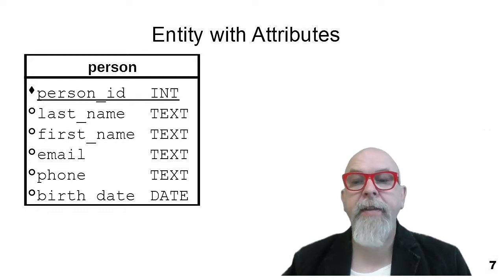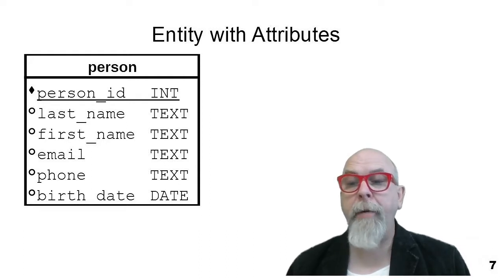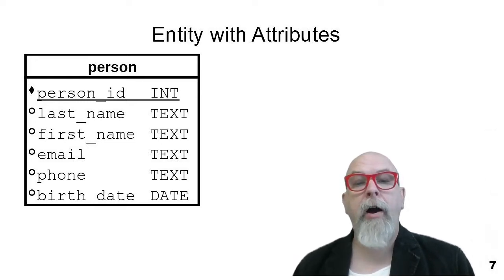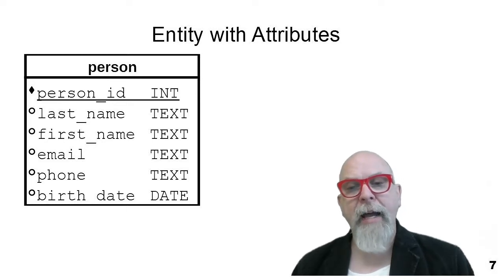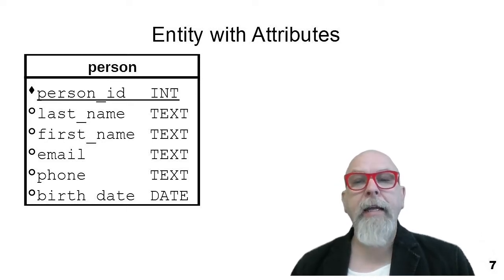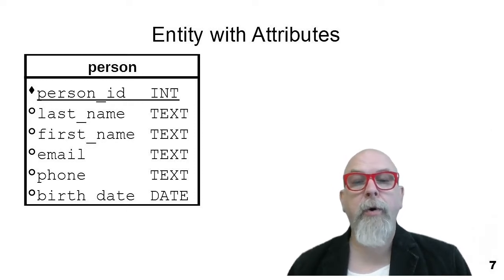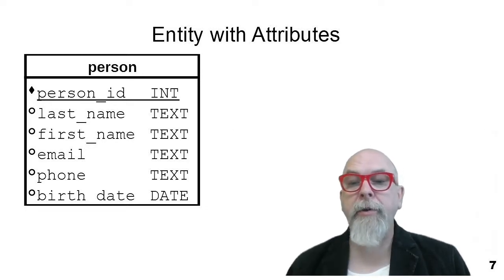Here is an entity that describes a person. I've got a primary key of a person ID — I give each person a number — and you can see that by the word 'int,' saying that it's an integer attribute. The attributes I'm collecting about people are last name, first name, email, phone, and birthday. I really don't like seeing spaces in attribute names when defining them, as it makes writing SQL statements more difficult. I usually put in an underscore or use camel case where I capitalize the first letter in each subsequent word.